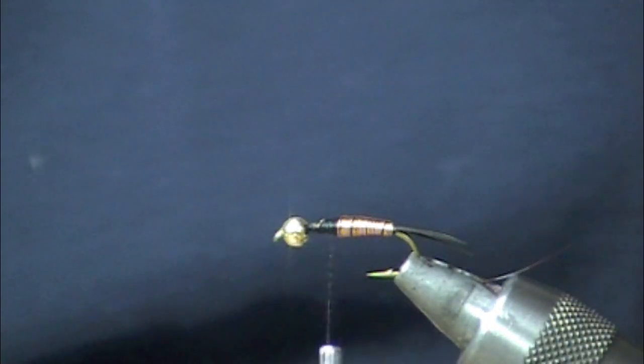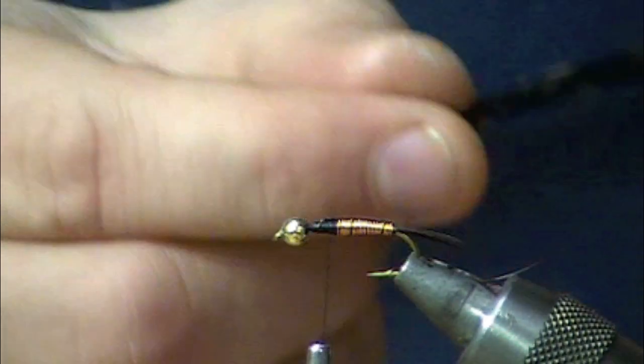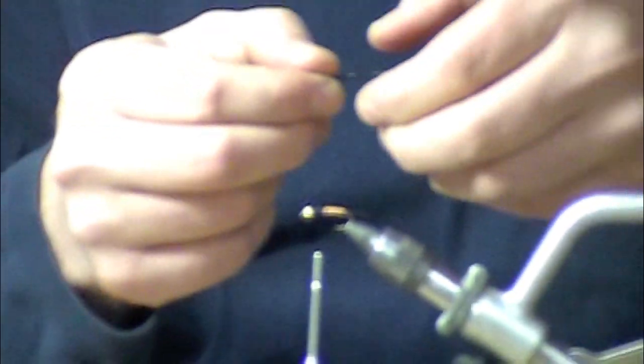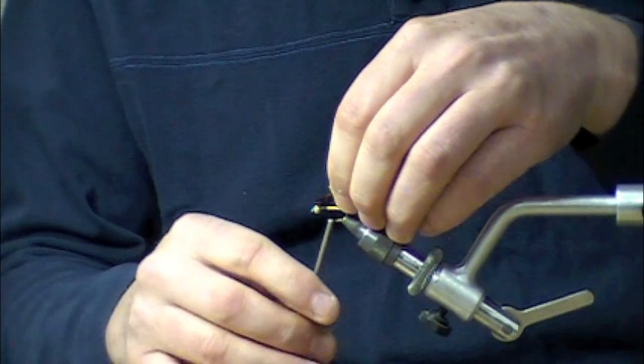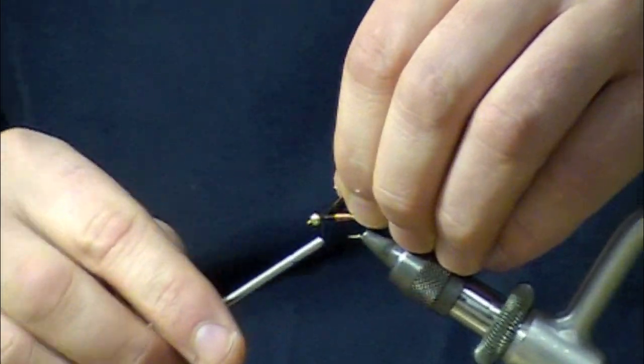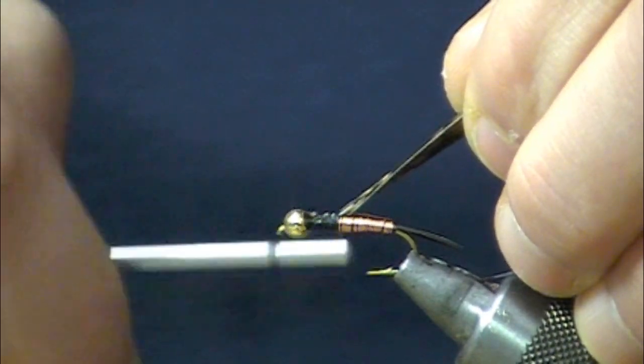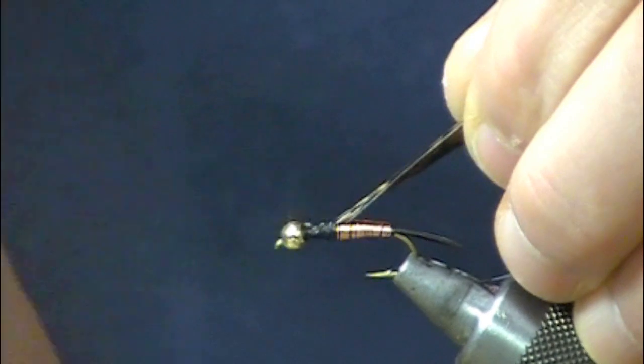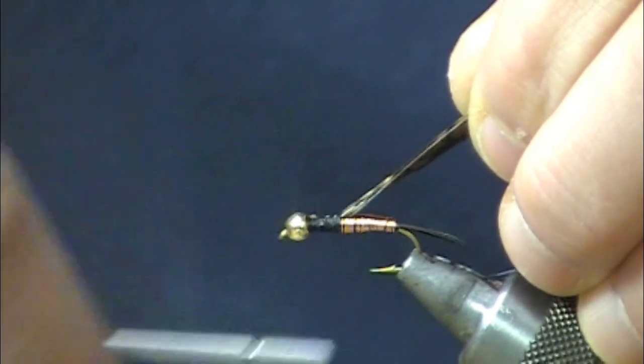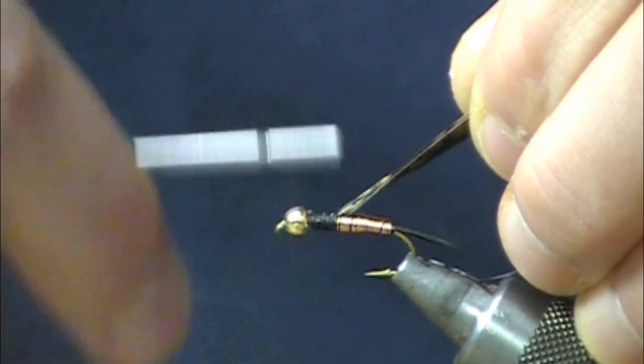Next thing I'm going to do is I'm going to take a piece of turkey quill. This will be the wing case here. Brighter side of that feather tied down towards the hook shank and that way when you flip it over you've got a little bit better coloration. Spend another second here kind of just helping build up that front end a little tiny bit.